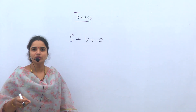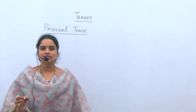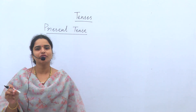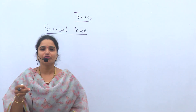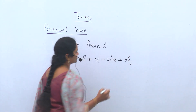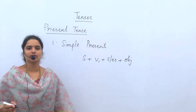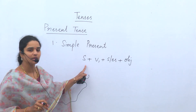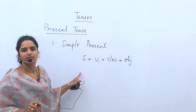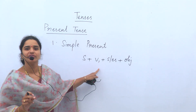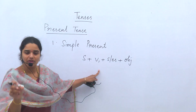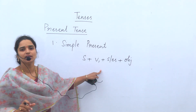Now as part of our topic today, let us discuss present tense first. Present tense is used to represent actions happening in the present. In present tense again we have four forms. So what are the four forms? First we will start the first form in present tense. The structure of simple present tense is: Subject plus V1 plus S or ES plus object. In simple present tense we always have to use V1 — we should not use V2 or V3 verb forms.